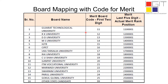Here is one circular regarding the board mapping with code for merits. In that you can see various board names like Gujarat Technological University, RK University, DD University, MS University, etc. In this column you can see the first two digits are your merit board code in your rank. For GTU, the merit board code is 11.